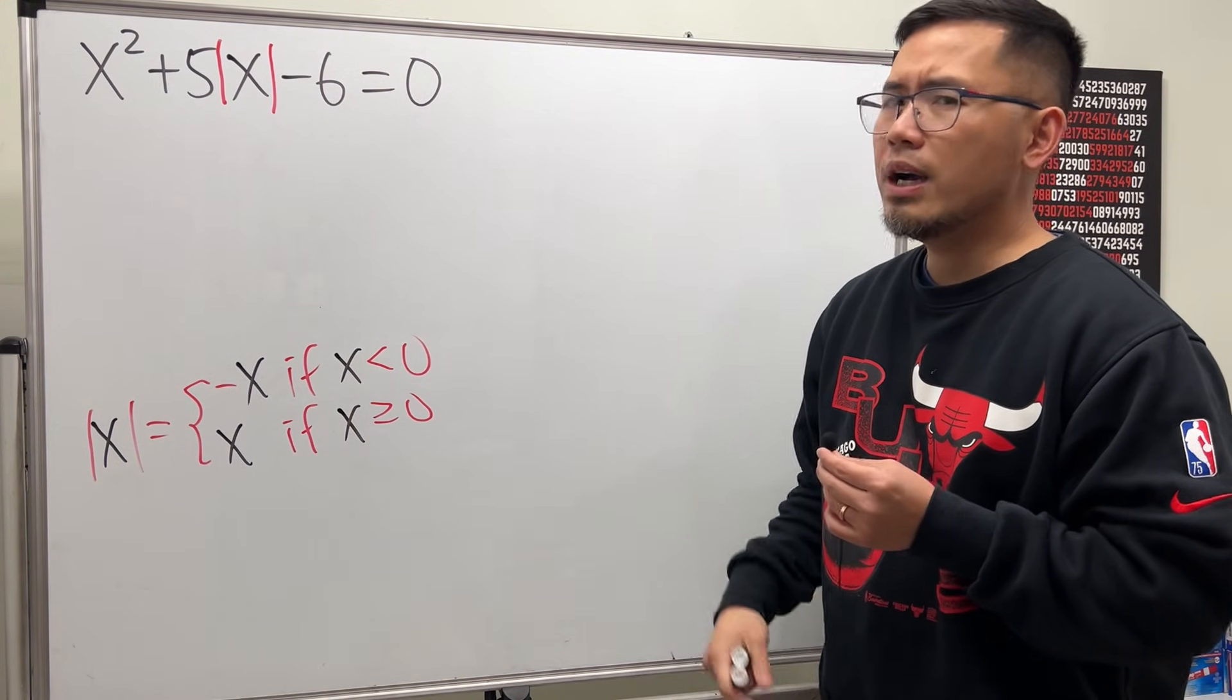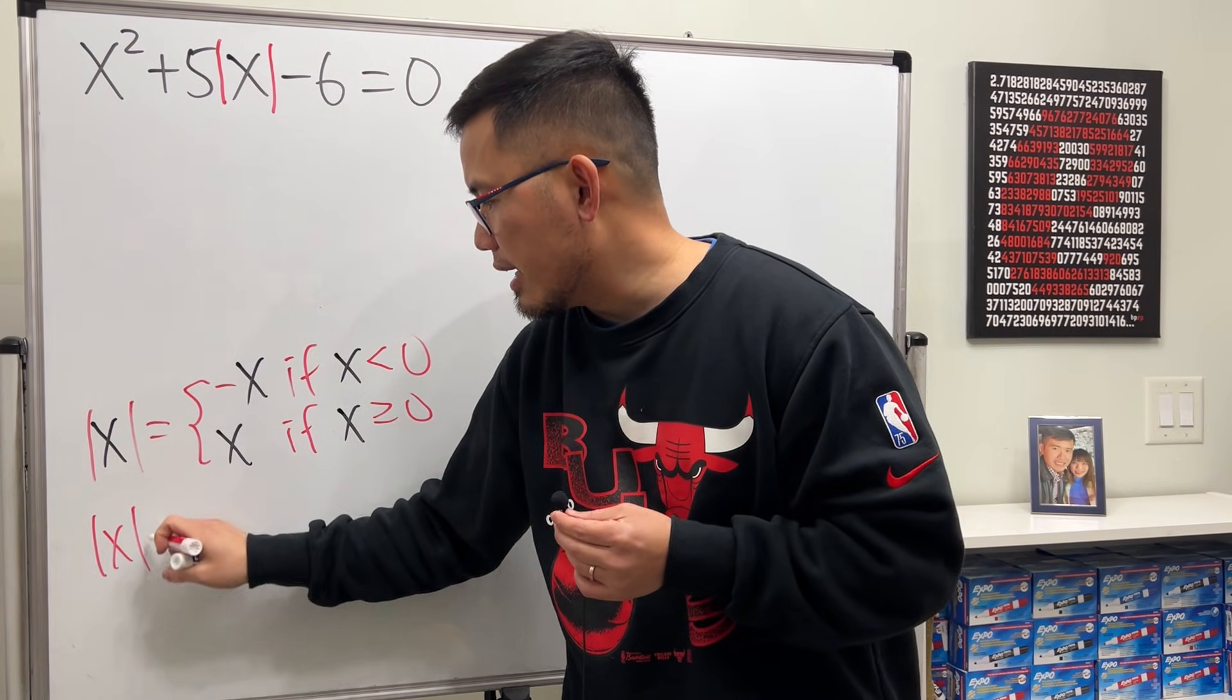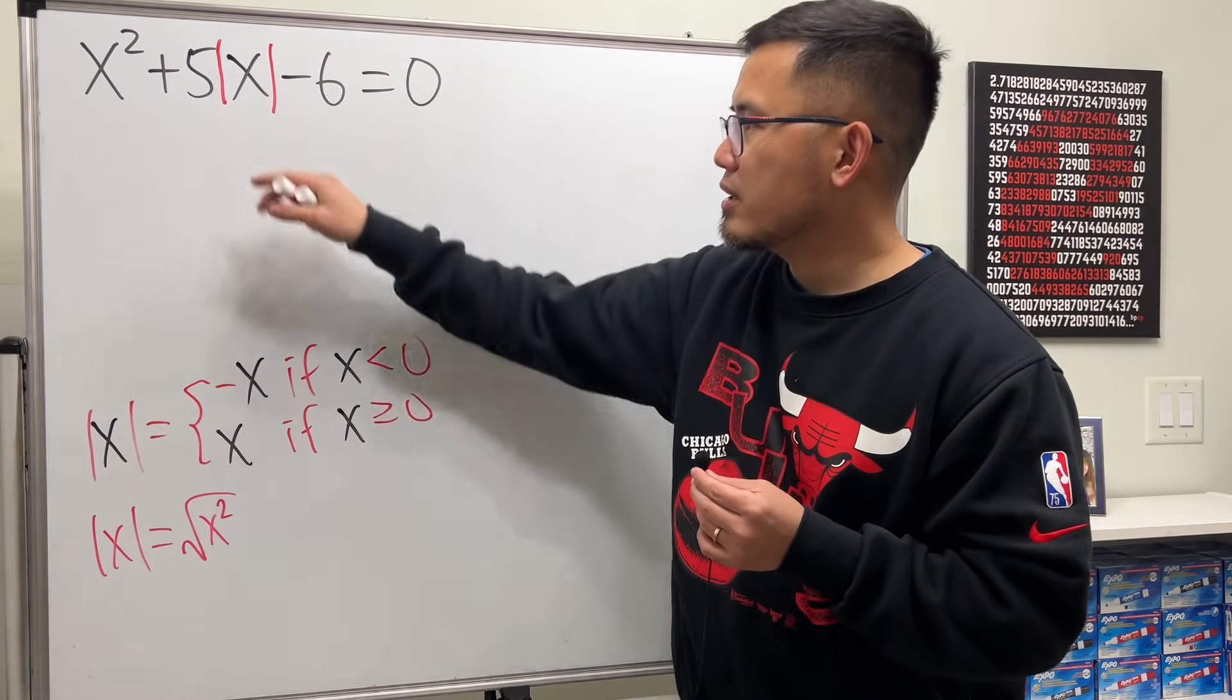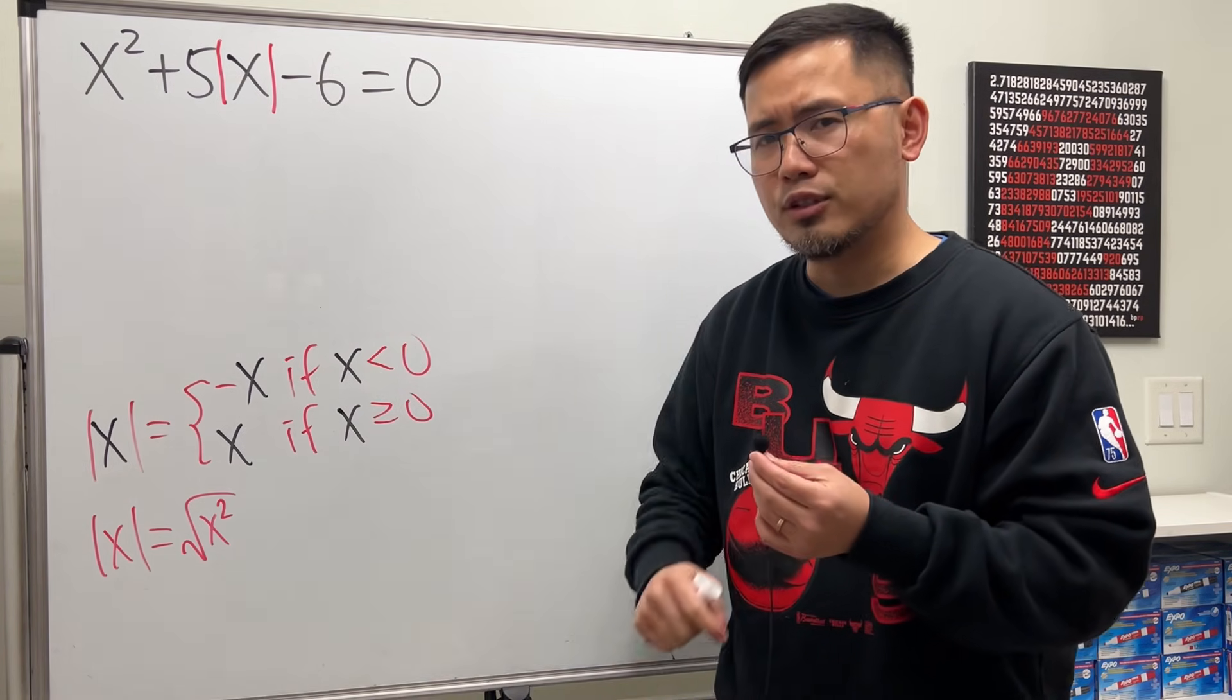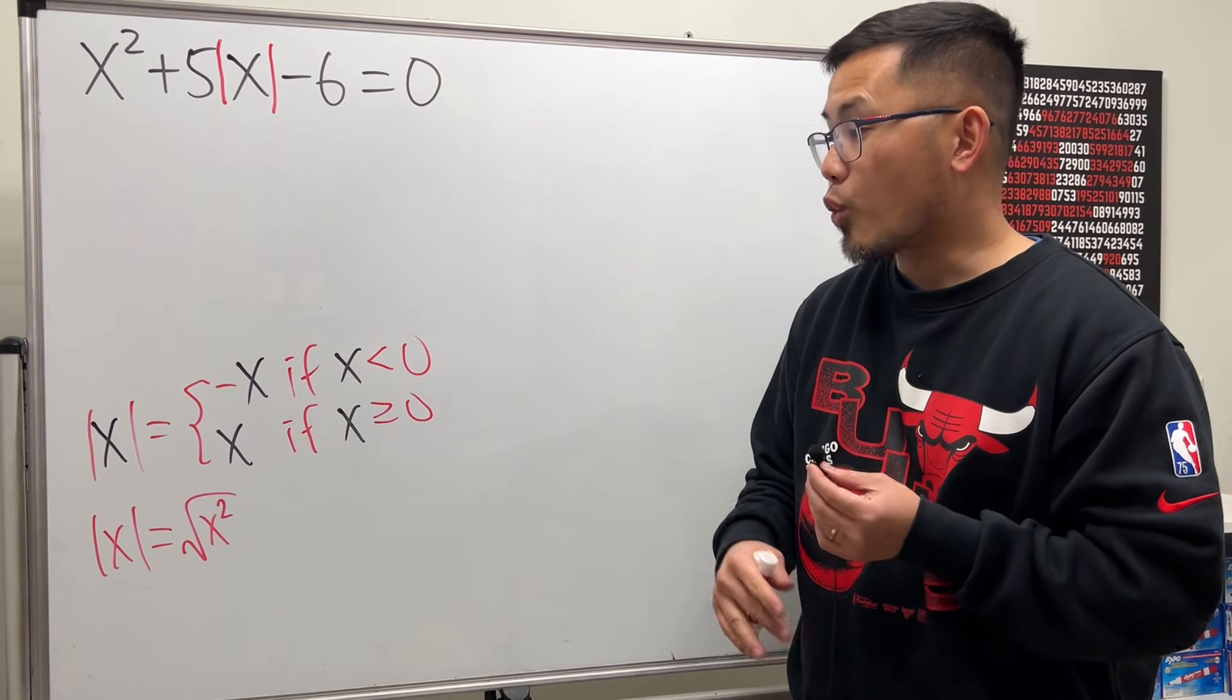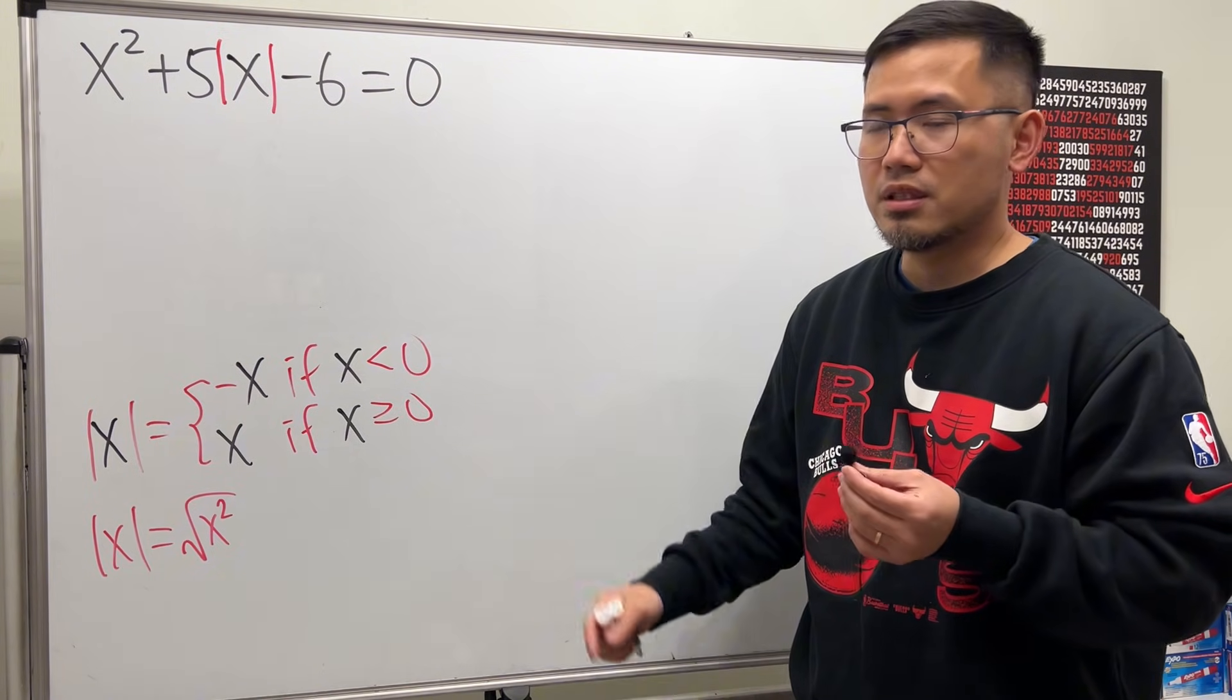And I also try with another one, because we can write absolute value of x as square root of x squared. Yeah, and then I put this back here, and then I isolate that part, and then try to square both sides. And you can try it, you might end up with like a quartic equation. So that's at most four solutions, right? How did we get six, though?